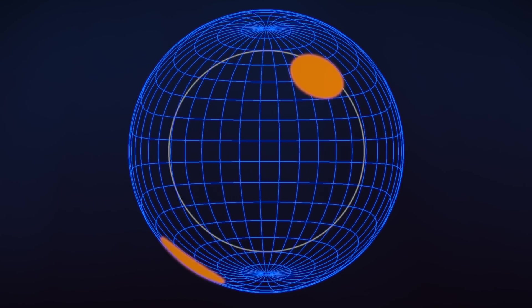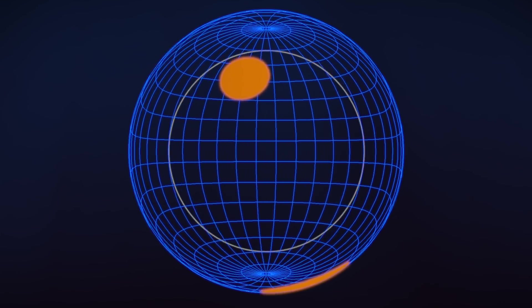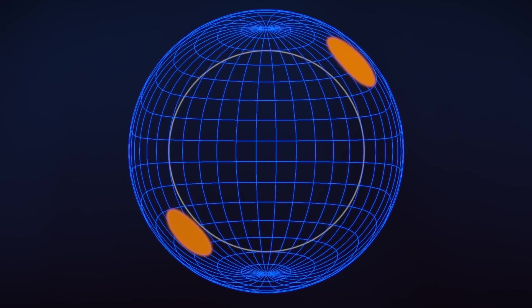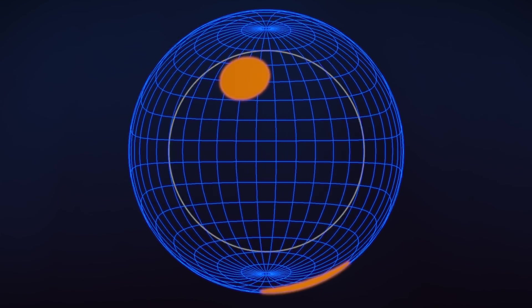Textbooks show pulsars with two hot spots on the surface, directly opposite each other at the magnetic poles. As the pulsar spins, the spots come in and out of view, creating regular changes in its X-ray brightness.